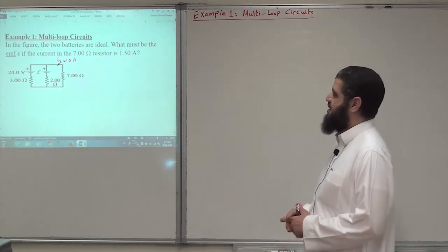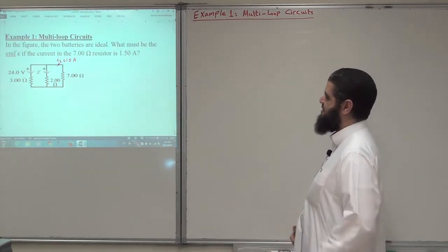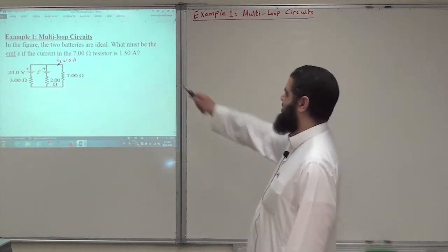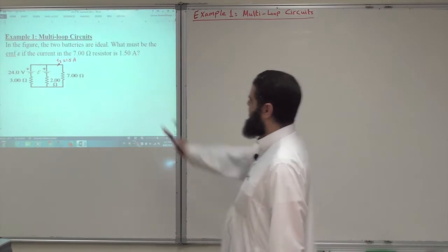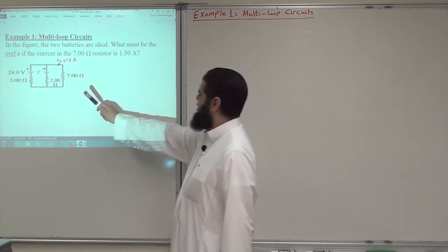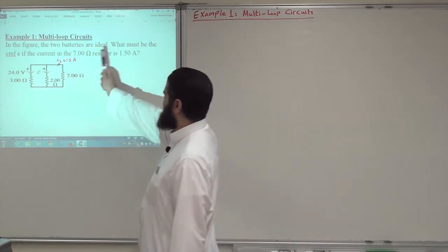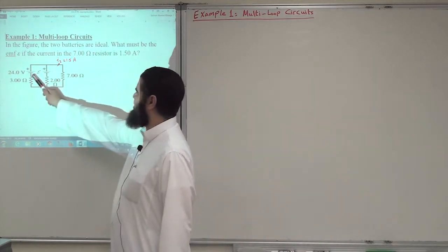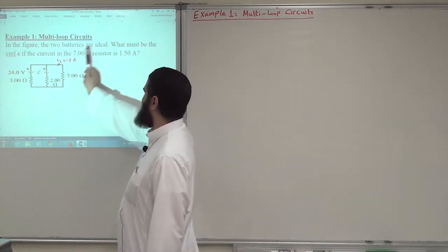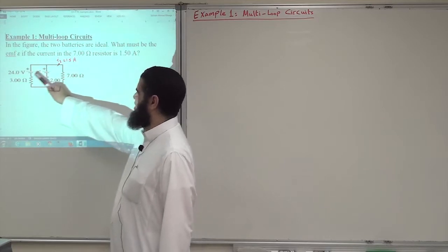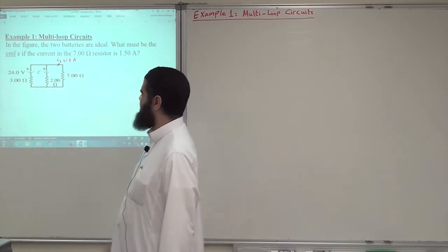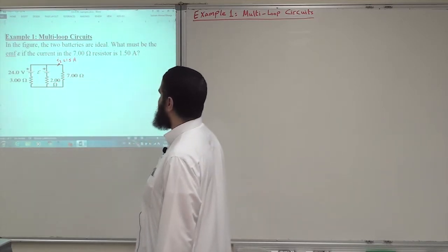Bismillah ar-Rahman ar-Rahim. This is the first example on multi-loop circuits. We have a figure where two batteries are ideal. The word ideal means that there is no internal resistance of these batteries.